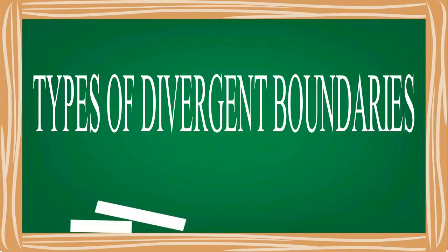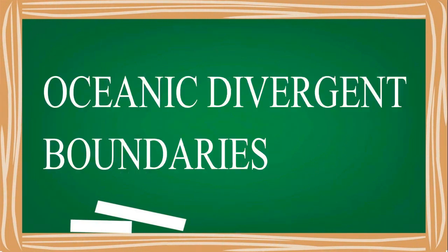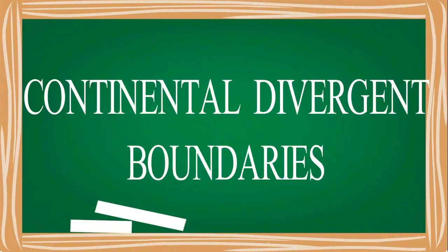Now we will proceed to the types of divergent boundaries. There are two types of divergent plate boundaries: first is oceanic divergent boundaries, and the other is continental divergent boundaries.